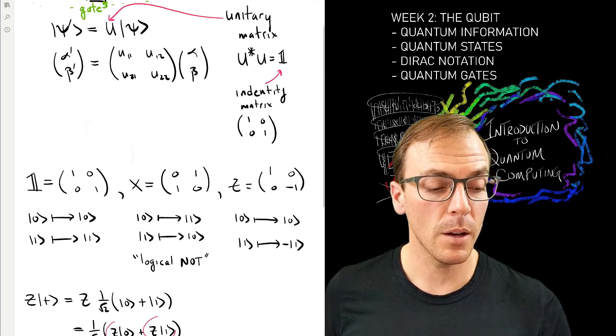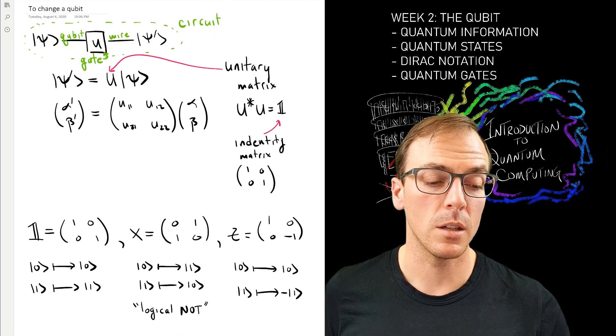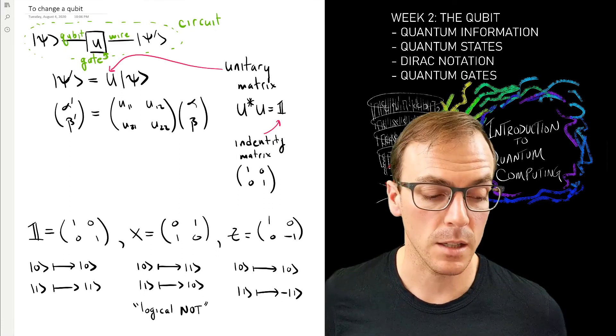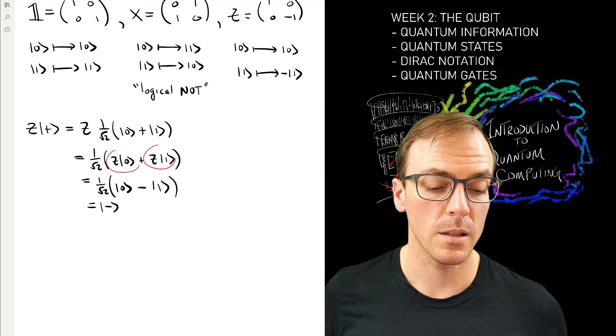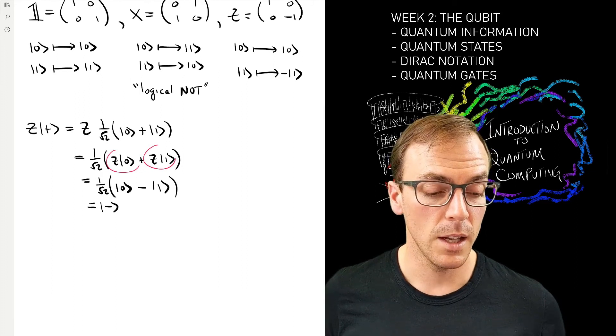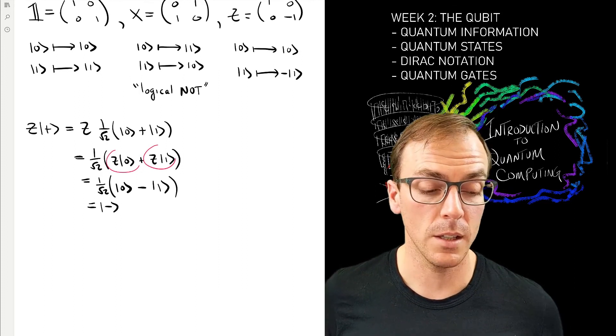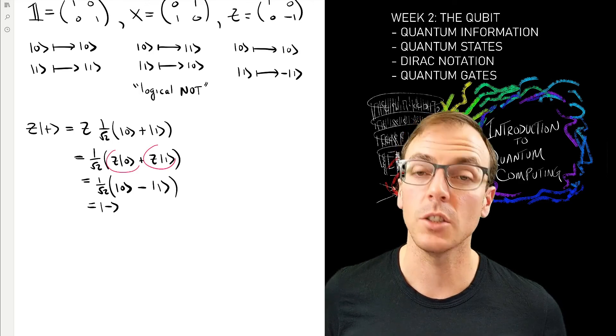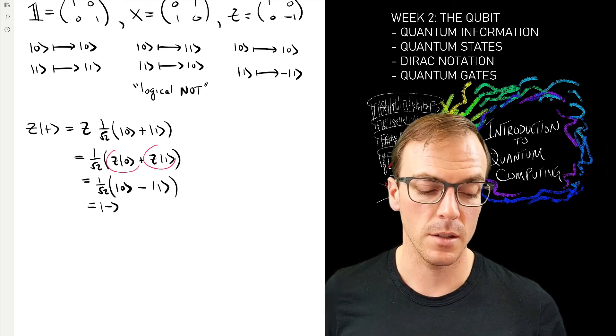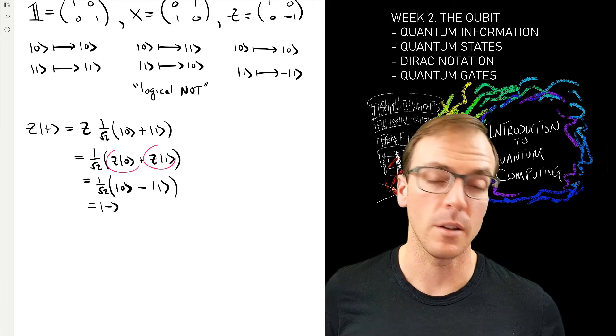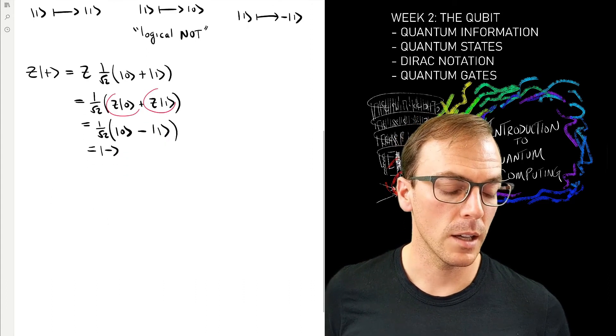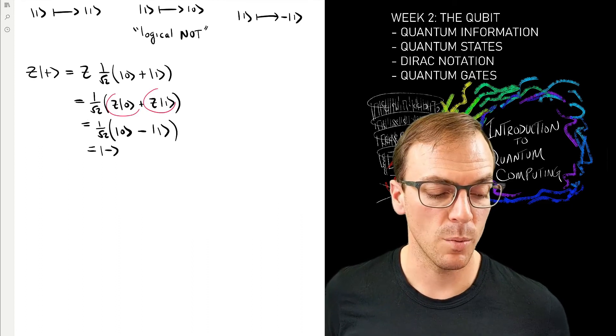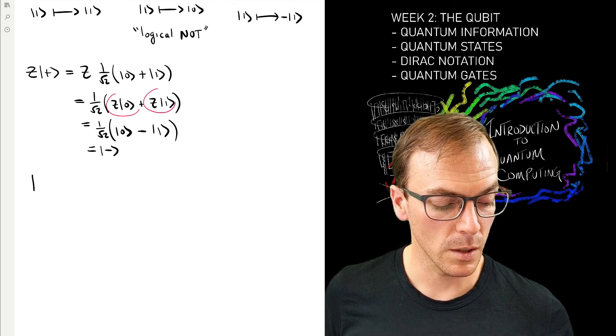Now, if I'm thinking about starting my computation in all of these quantum circuits in the computational basis, one of the computational basis states, then none of these gates that are written down actually generate these superpositions for me to start trying to interfere them. So how do I generate superpositions?